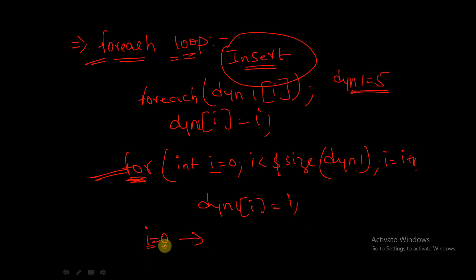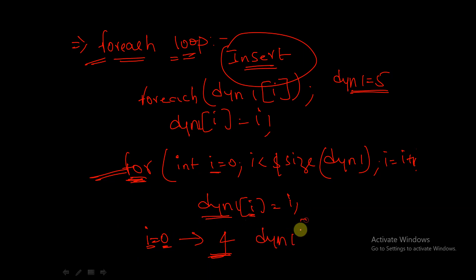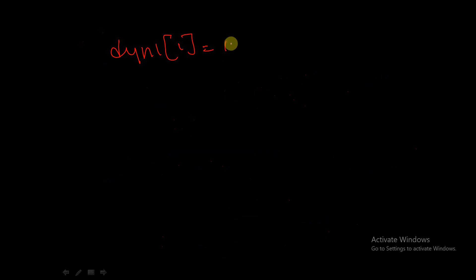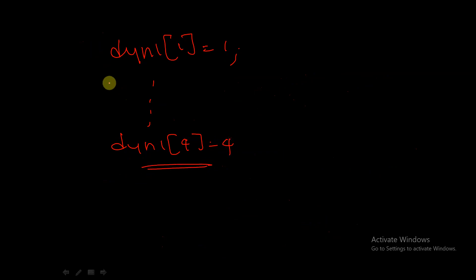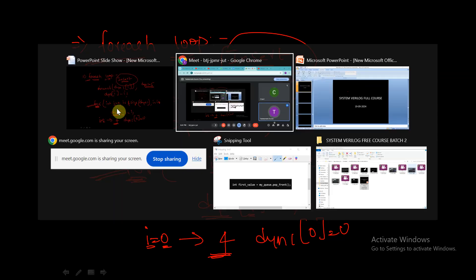So the i value increments from 0 to 4, and after reaching 4 it comes out of the loop. In the for loop, dyn1[0] = 0, dyn1[1] = 1, and so on, up to dyn1[4] = 4. This is how we write all elements into all memory locations using the for loop.